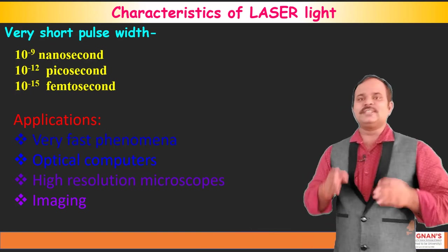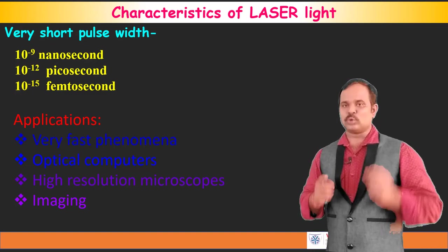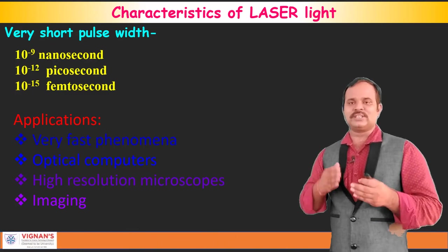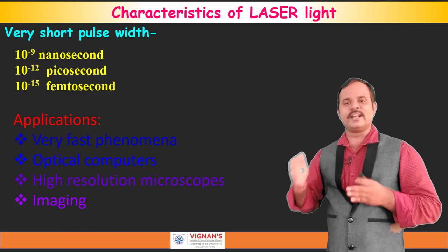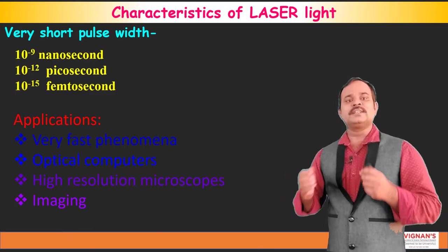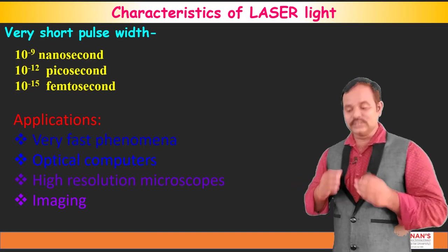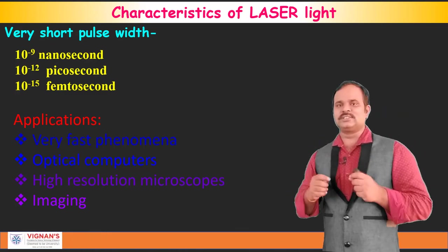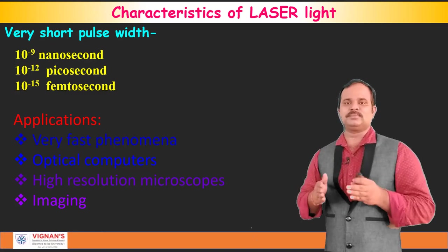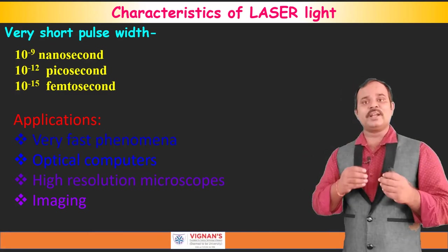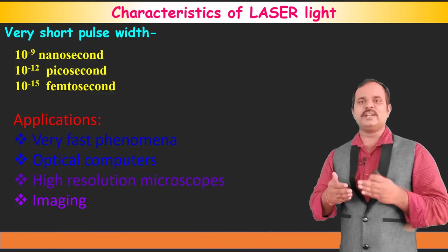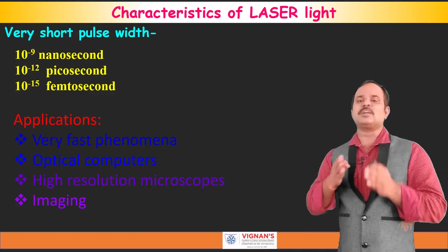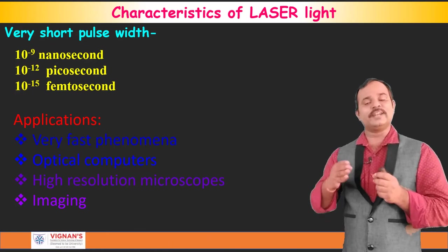Let me summarize the characteristics. There are five important characteristics of the laser. One is monochromaticity, that means single wavelength nature. Second one is coherence — laser light will have a coherent nature. Third one is highly directional. The fourth one is high intensity. And the fifth one is very short pulse width. These are the characteristics of the laser. Now, because of these special characteristics, the laser finds a lot of applications in day-to-day life, whereas a normal light doesn't have these special characteristics, so we cannot use normal light in all these applications.